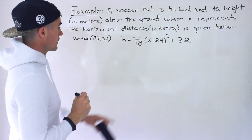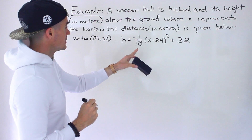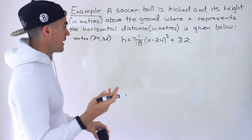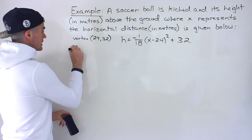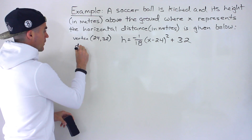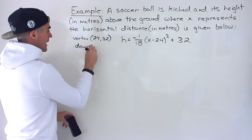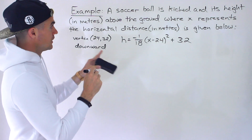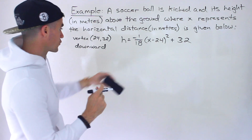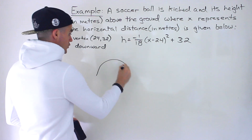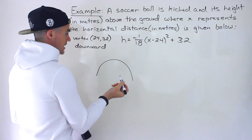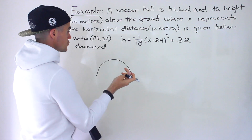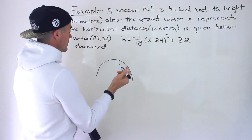Notice that the a value is negative, and that makes sense because it means the parabola is opening downward. If you think about it, if you kick a soccer ball, it's going to create an upside-down U shape. So the parabola should be opening downward, meaning the a value should be negative.